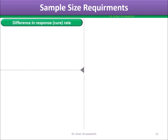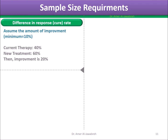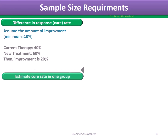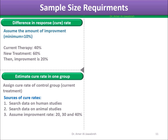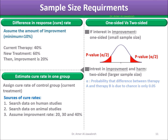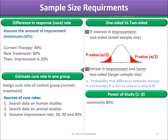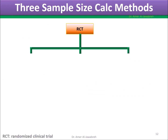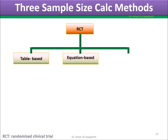Sample size requirements: (1) Difference in cure rate — assume a minimum 10% improvement. If current therapy has a 40% cure rate and the new treatment is assumed to have 60%, the improvement is 20%. (2) Estimate cure rate in one group — assign cure rate for a control group from human studies, animal studies, or assumed improvement rates of 20%, 30%, or 40%. (3) One-sided versus two-sided: if interest is in improvement only, use one-sided for a smaller sample size; if interest is in both improvement and harm, use two-sided for a larger sample size. (4) Power of study — commonly 80%. Three sample size calculation methods: table-based, equation-based, and online calculators.